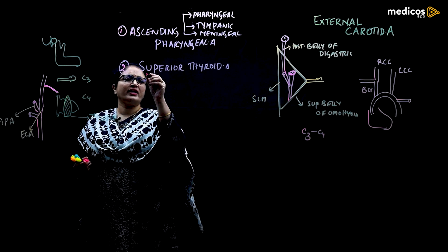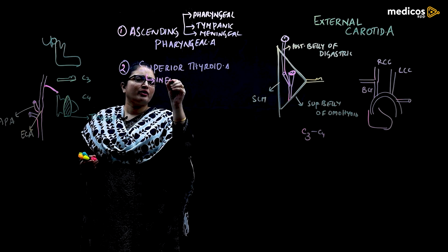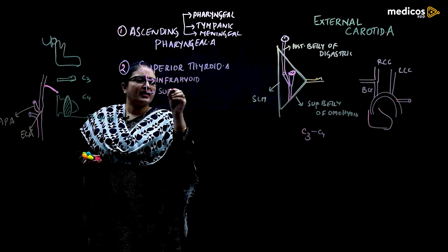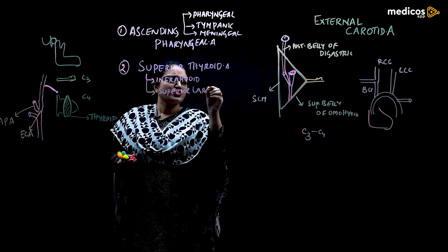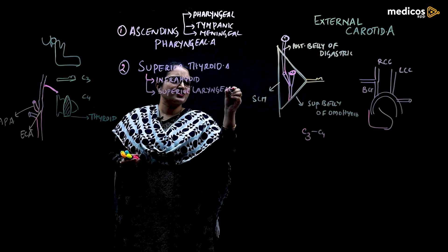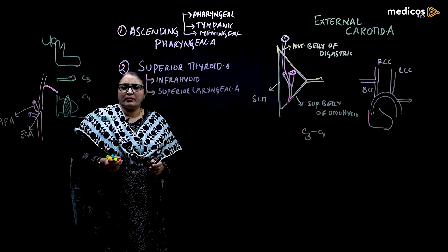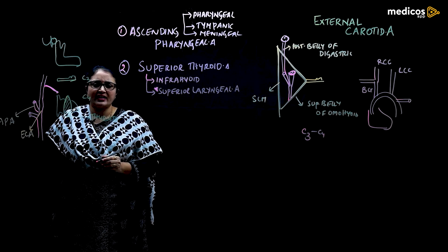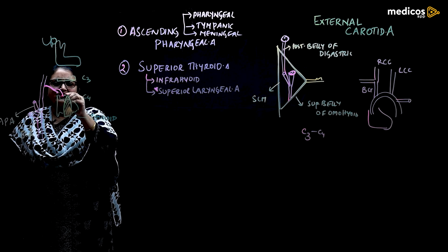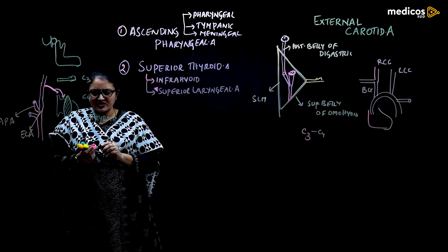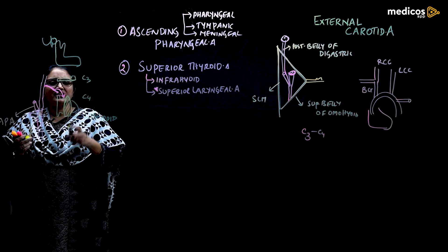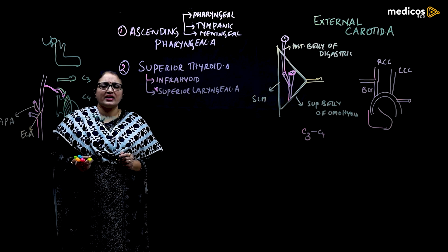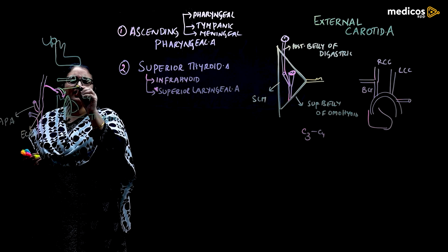The superior thyroid artery provides an infrahyoid branch and a superior laryngeal artery. The superior laryngeal artery supplies the interior of the larynx and is accompanied by the external laryngeal nerve. The superior thyroid artery gives a superior laryngeal artery which is accompanied by the external laryngeal nerve.